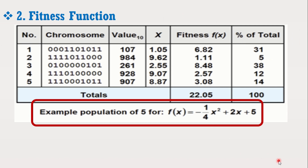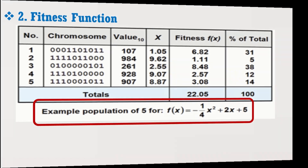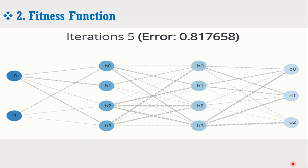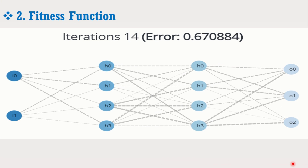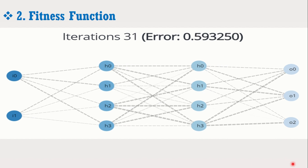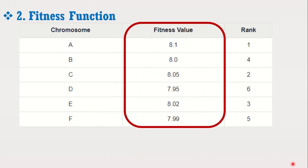Step two is the fitness function. After initialization of the population, we determine the ability of each individual to compete with others using the fitness function. It determines how fit an individual is, or how close it is to the quality-based solution. For example, if we are minimizing error, the best fit individual will have the lowest error. This is done by assigning a fitness score to each individual. Higher the fitness score, higher the chances of being chosen for reproduction, and vice versa.